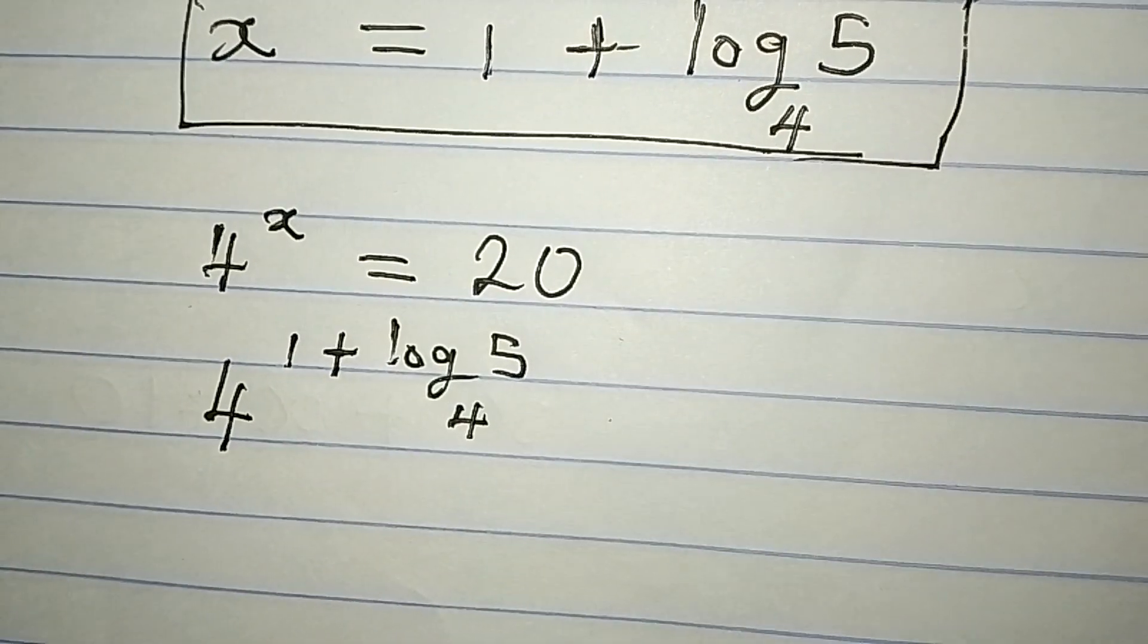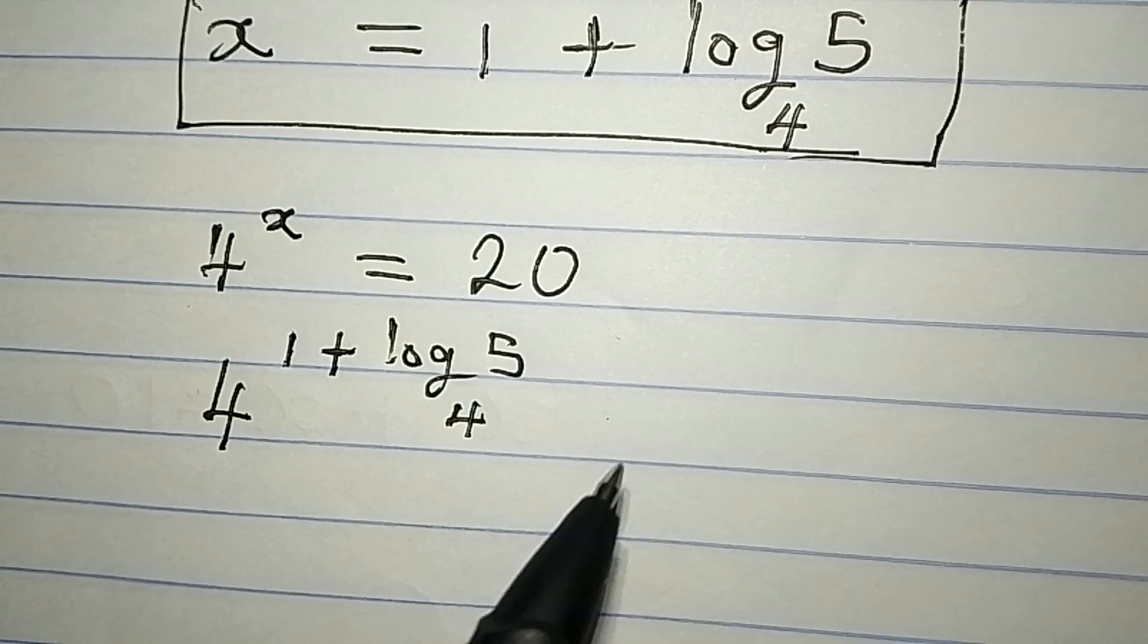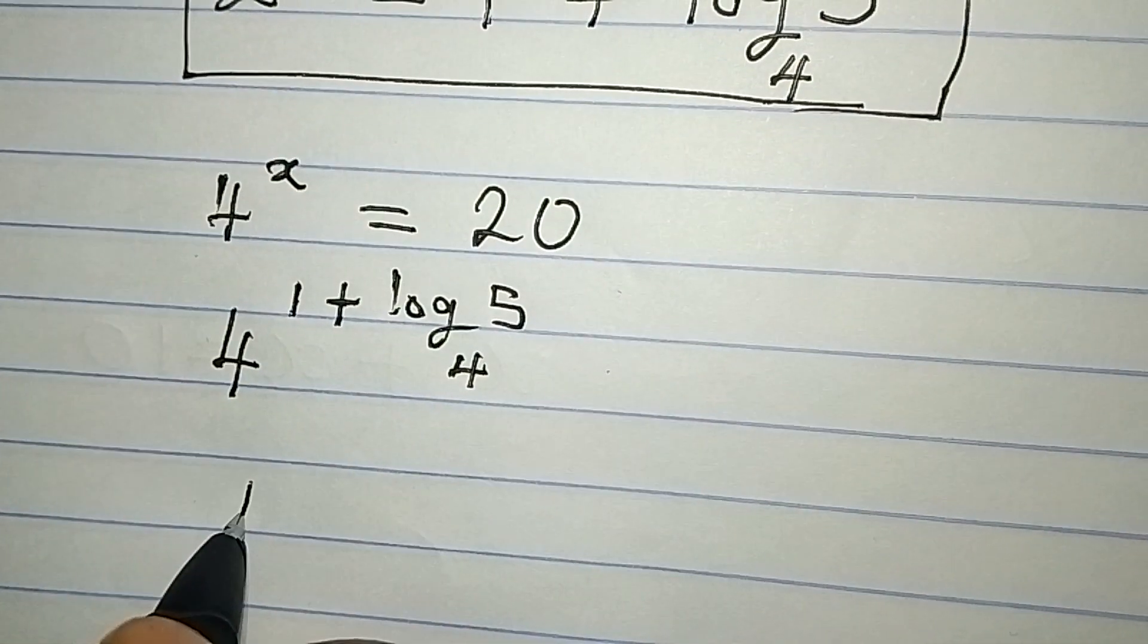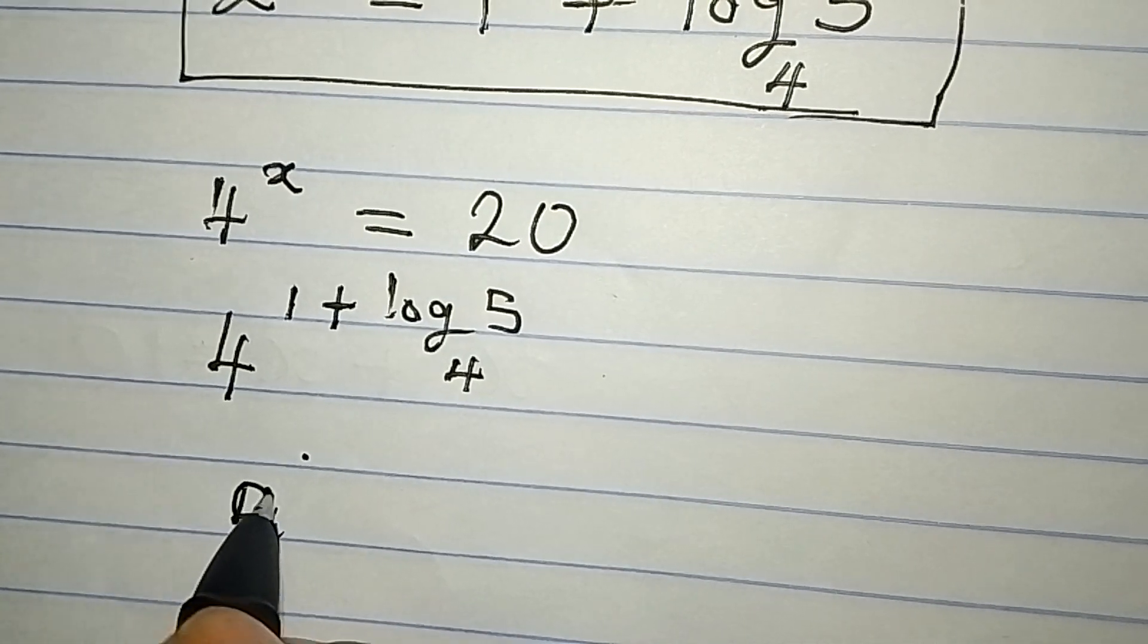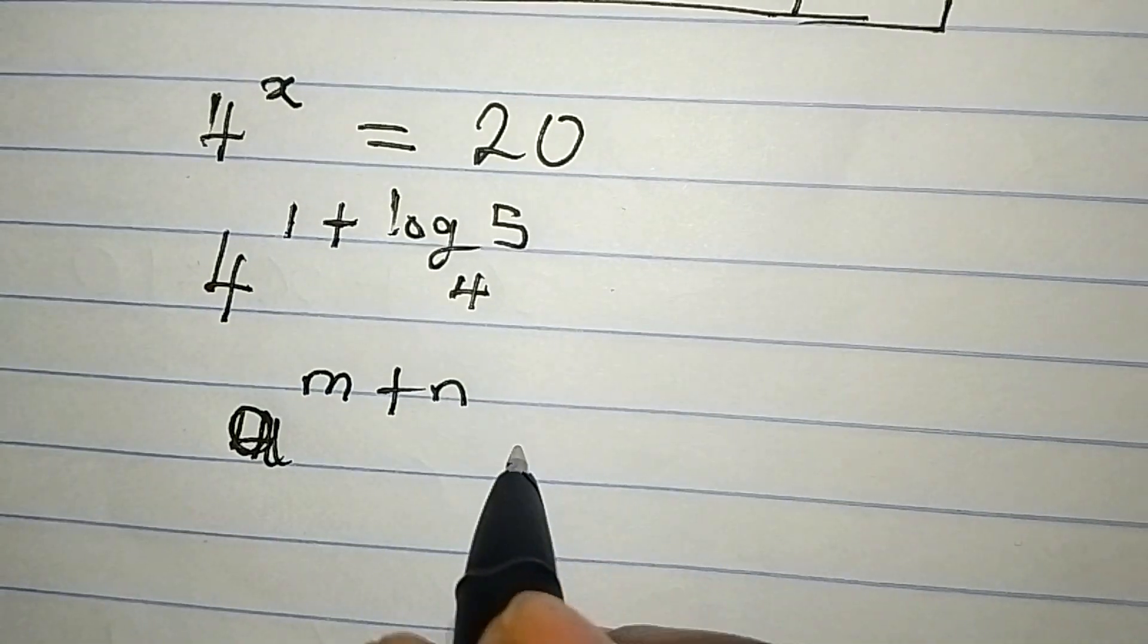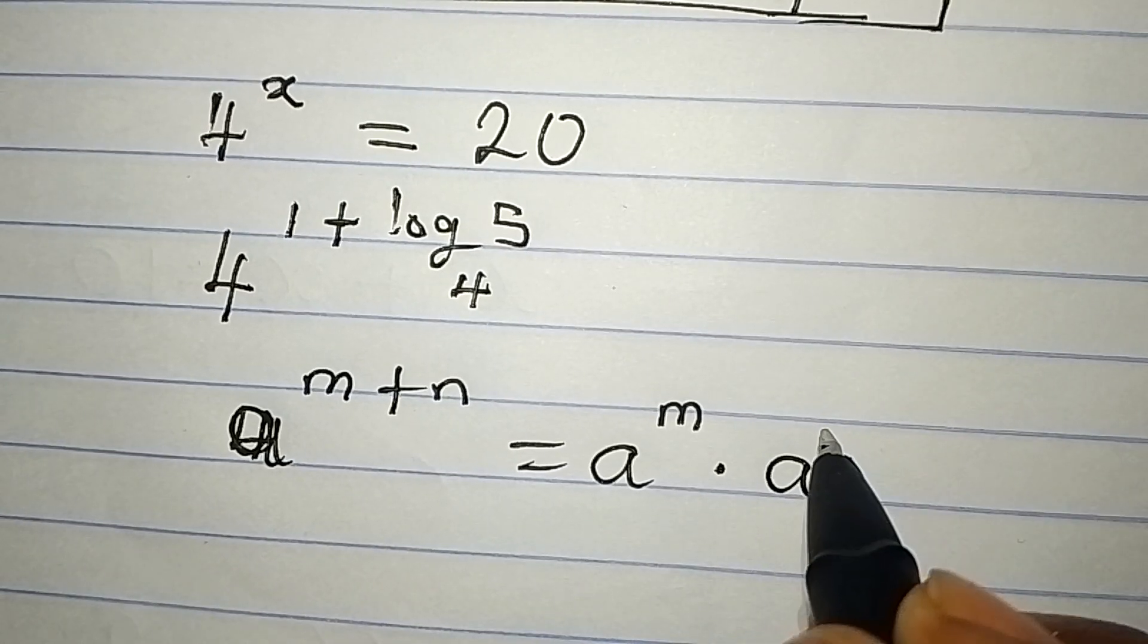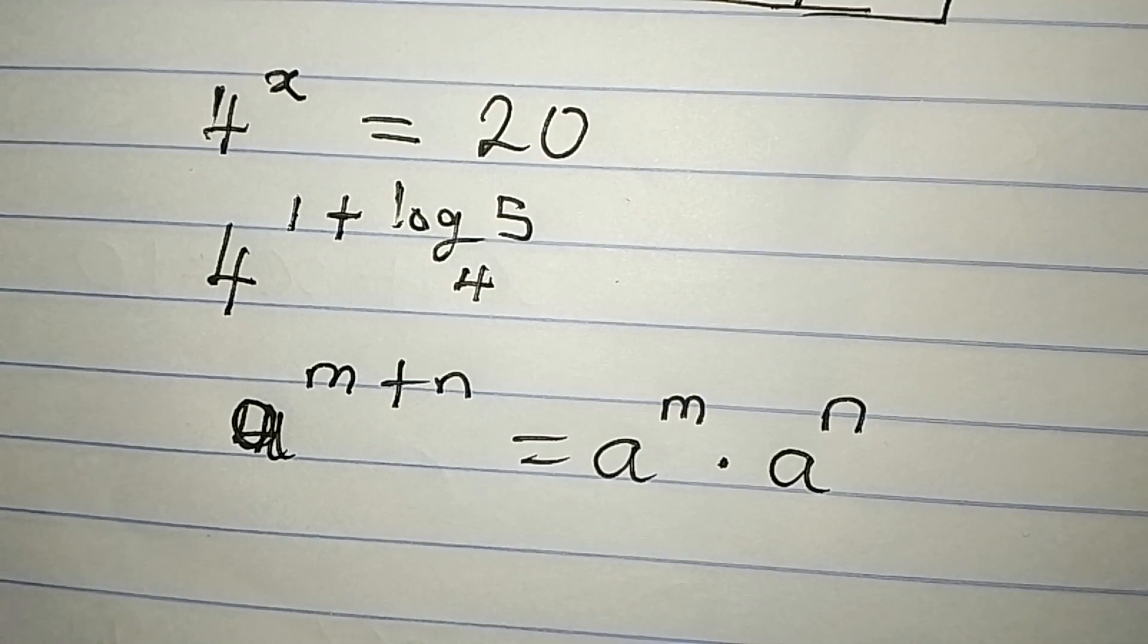The question is will this be equal to 20? Remember that if you have a to the power of m plus n, this is the same thing as a to the power of m multiplied by a to the power of n, obeying one of the rules or the laws of indices.